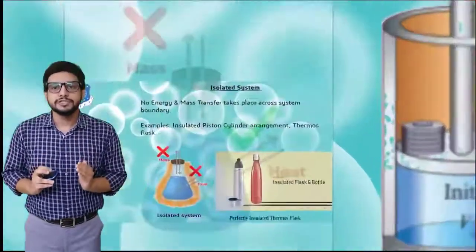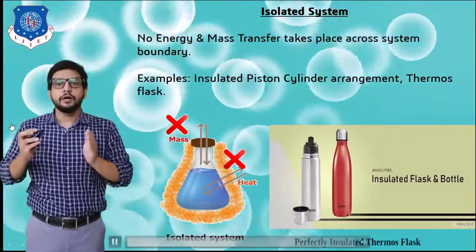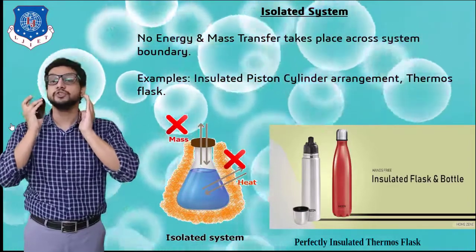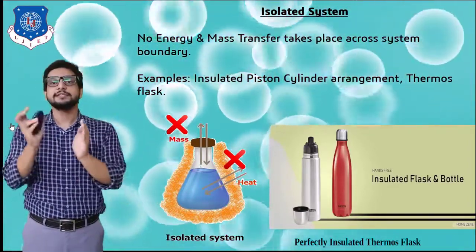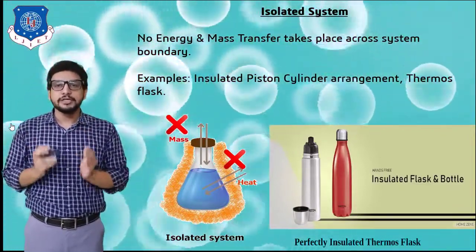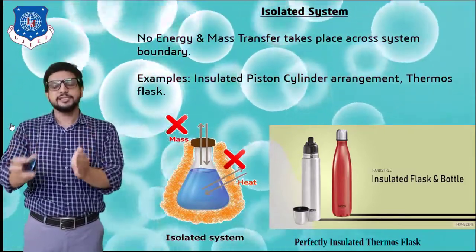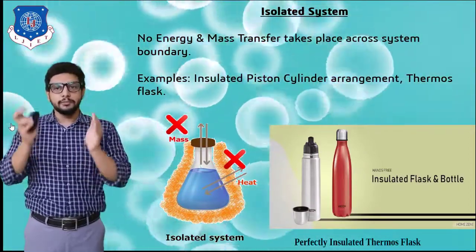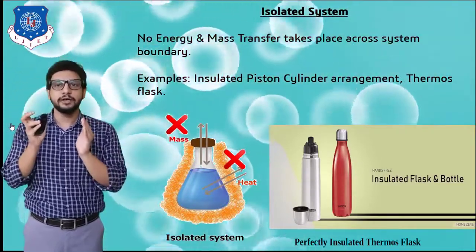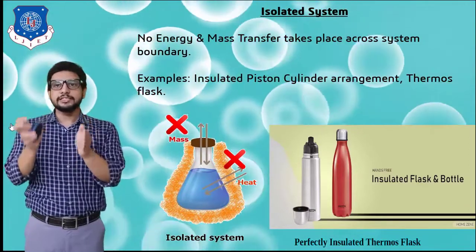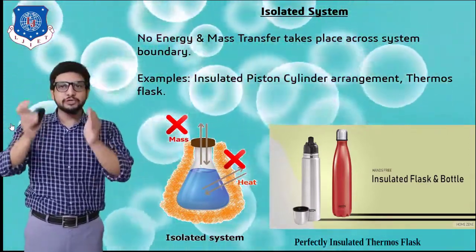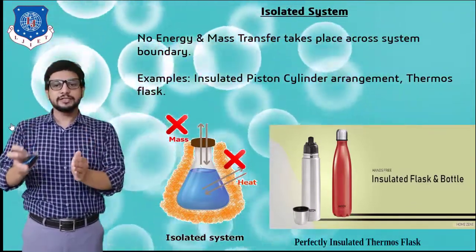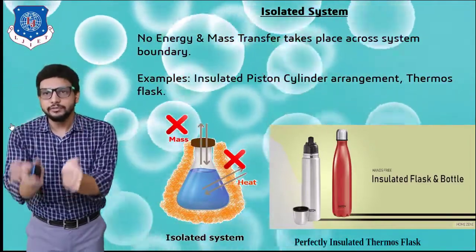The next type is an isolated system, in which there is no mass transfer as well as no energy transfer across the system boundary. Examples are an insulated piston-cylinder arrangement and a thermos flask. On screen, water is filled in a container, the top is completely closed, and insulation surrounds the system — the adiabatic boundary prevents energy transfer, and the closed top prevents mass transfer. Isolated simply means the system is isolated from its surrounding.